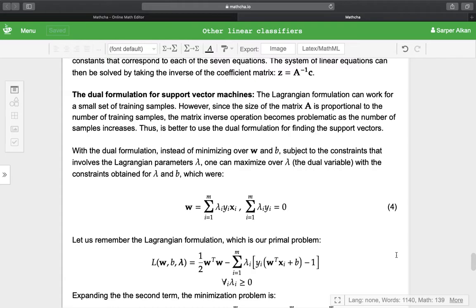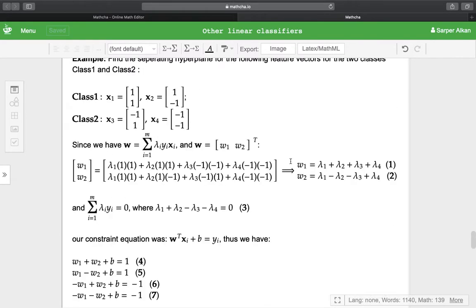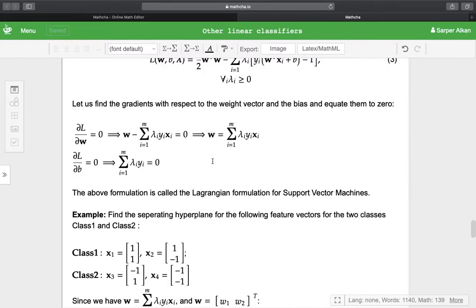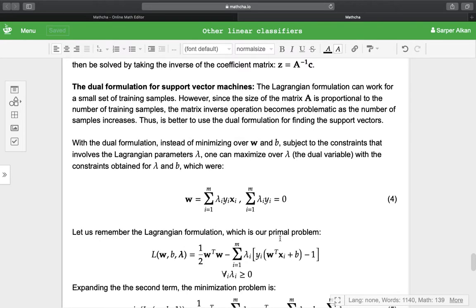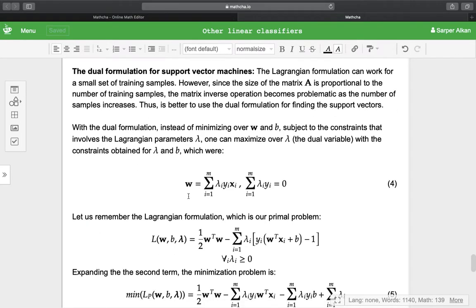The constraints for λ and B can be obtained by the Lagrangian formulation. So W = Σ(i=1 to m) λᵢyᵢxᵢ. And we also know that Σ(i=1 to m) λᵢyᵢ = 0.